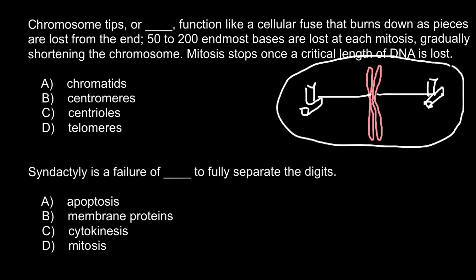Answer D: telomeres. Telomeres are found on the tips of chromosomes — on each tip. They protect the chromosome from degradation with each cycle of replication. These protective caps lose about 50 to 200 bases per cycle. When the caps become very small, genes are no longer protected from degradation, and at that stage the cell initiates programmed cell death. So the correct answer is Answer D.